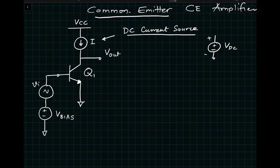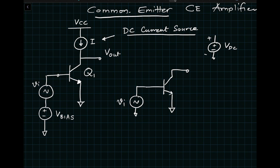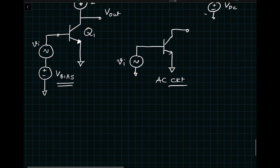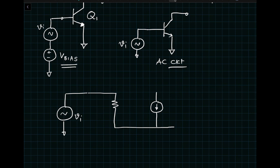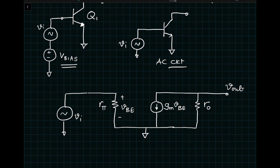For AC analysis: we short all DC voltage sources and open all DC current sources. So the AC analysis circuit has only VI going in. The current source I is open because it is a DC current source, and VCC connects to ground but does not come into play. Pause the video now and on your own draw the small signal model of this circuit.